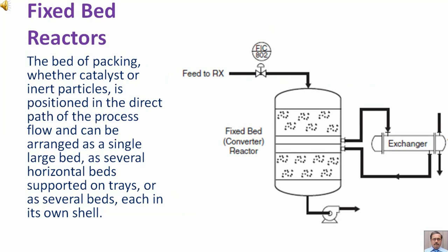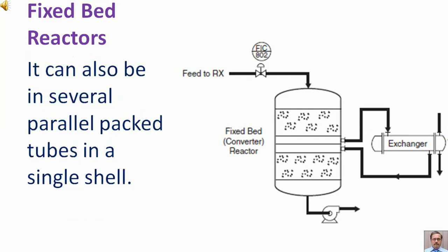The bed of packing, whether catalyst or inert particles, is positioned in the direct path of the process flow and can be arranged as a single large bed, as several horizontal beds supported on trays, as several beds each in its own shell, or in several parallel packed tubes in a single shell.